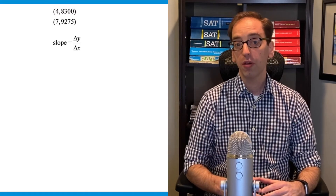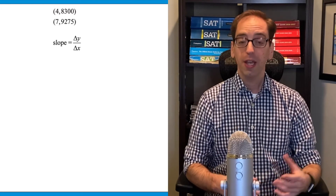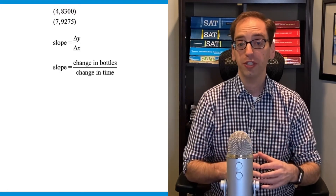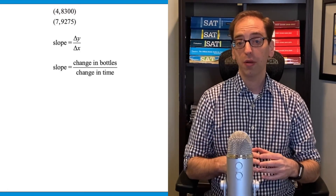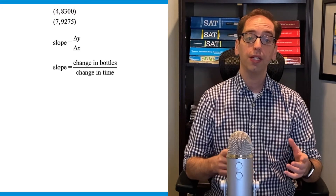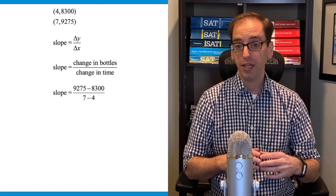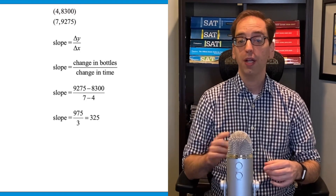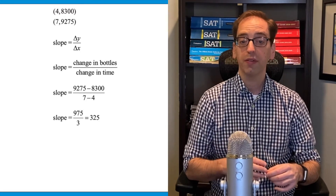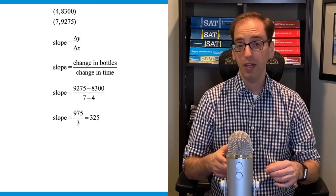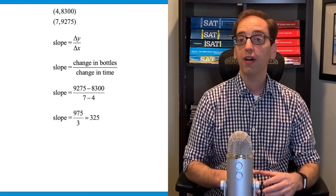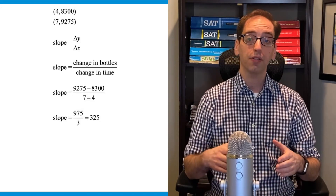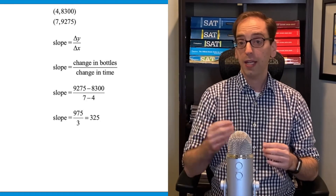The formula for slope is change in y over change in x — in this case, change in bottles over change in time. Using those coordinates: 9,275 minus 8,300 over 7 minus 4 gives us 975 over 3, which equals 325. So 325 is the slope — in context, that means how many bottles they're making each hour.